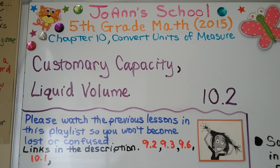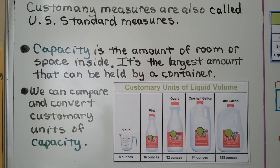Lesson 10.2: Customary Capacity and Liquid Volume. Customary measures are also called U.S. Standard Measures. Capacity is the amount of room or space inside a container — it's the largest amount that can be held. We can compare and convert customary units of capacity.